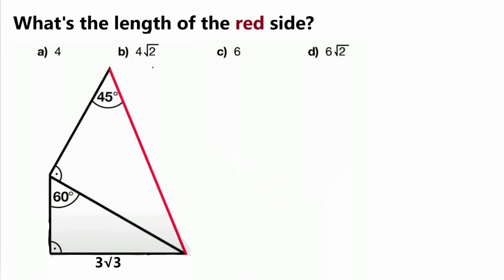Hello everybody and welcome back to another math learning video. Today we have some geometry again. We are given the following problem: what's the length of the red side here? We are also given four answer possibilities: A) 4, B) 4 times square root of 2, C) 6, or D) 6 times square root of 2.